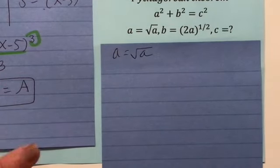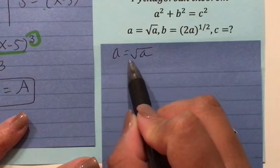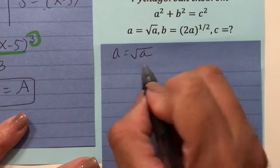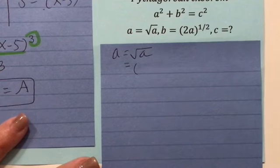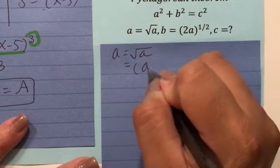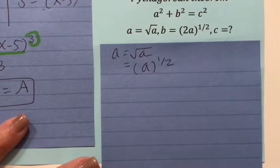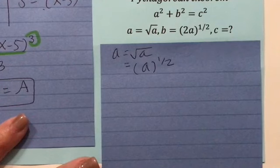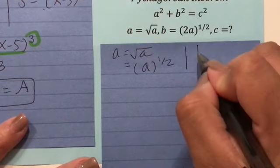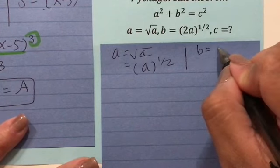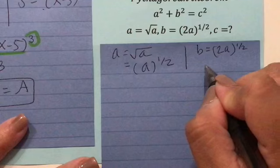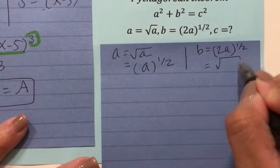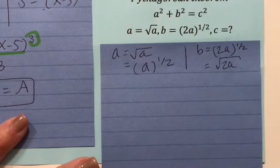Just zoom in. So you're saying that a is equal to square root of a, which is also equal to a to the 1 half. And then you're saying that b is equal to 2a to the 1 half, which is also equal to the square root of 2a.